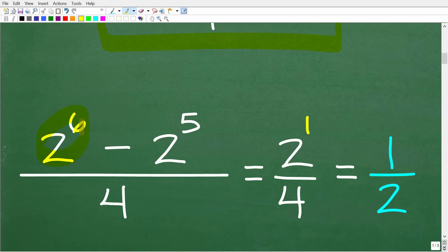So that seems pretty logical. So we have 2 to the 6th minus 2 to the 5th. So maybe this is equal to 2 to the 1st, which is 2. So now we have 2 over 4, and we can reduce this fraction down to 1 half. All right, so what do you think? You think this looks pretty good?